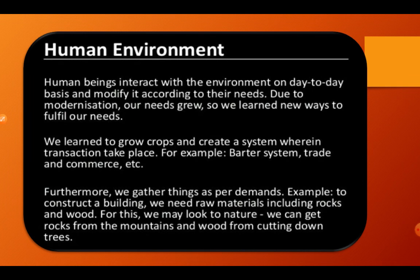Groups of families started living together, which led to the development of communities and villages. The agriculture and industrial revolution led to the generation of surplus food and goods. Every individual is a part of some community and religious groups. Furthermore, we gather things as per demand — for example, to construct a building we need raw materials like bricks, cement, rocks, and wood, for which we look to nature.